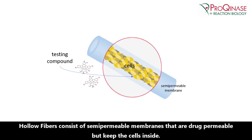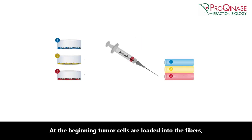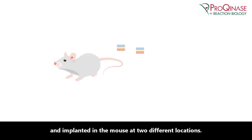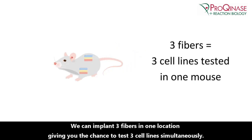Hollow fibers consist of semipermeable membranes that are drug permeable but keep the cells inside. Tumor cells are loaded into the fibers and implanted in the mouse at two different locations. We can implant three fibers in one location, giving you the chance to test three cell lines simultaneously.